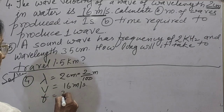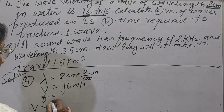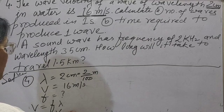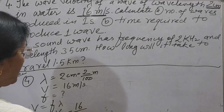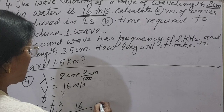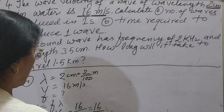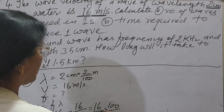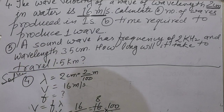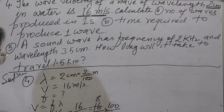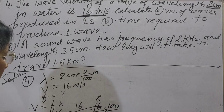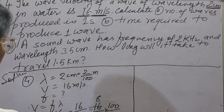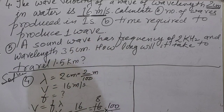We will find frequency using the formula V is equal to F into lambda. So F is equal to V by lambda, which is 16 divided by 2 by 100. That gives us 16 multiplied by 100 divided by 2, so the frequency is 800 hertz. We have got the frequency — that is the answer to part A.